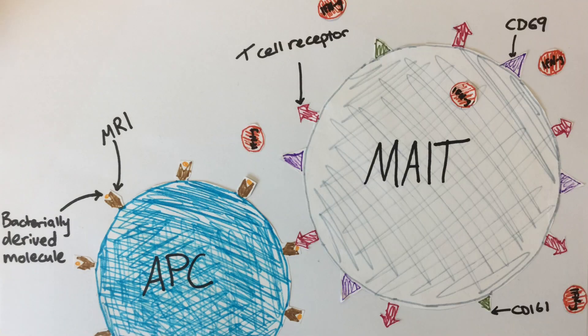After the interaction of the antigen-presenting cell and the MAIT cell, expression of CD69 and CD161 on the surface of the MAIT cell is upregulated and molecules such as interferon gamma are secreted. More immune cells will consequently be attracted to the site of infection and become activated.